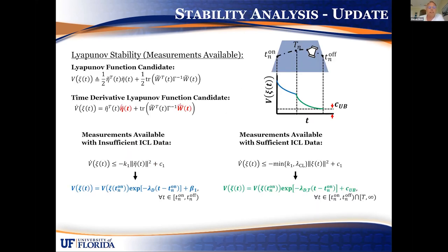By doing the Lyapunov analysis, I get exponential convergence at least to a ball. Before learning is sufficient, in this particular example, this ball is large. But then after I have sufficient data — ensuring the ICL condition is met — I can show exponential convergence to a much smaller ball, C_UB.